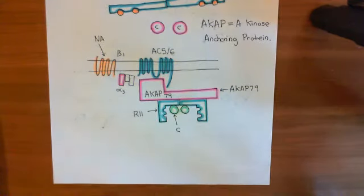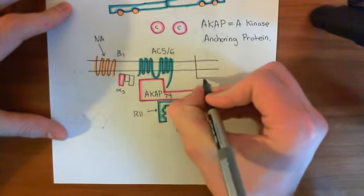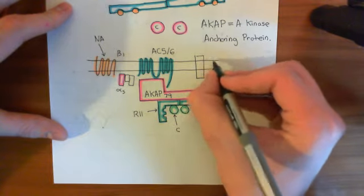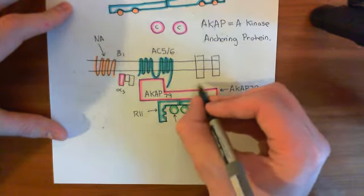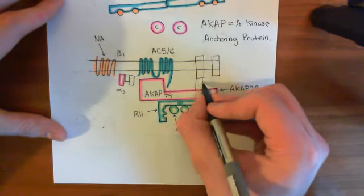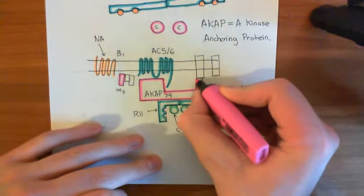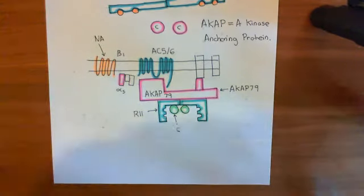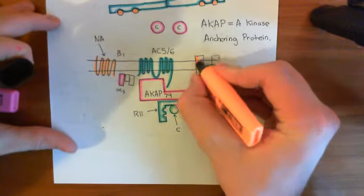The final component of this great big complex is the L-type voltage-gated calcium channel, which is also bound to the AKAP79. There's a binding extension from AKAP79 that connects to the L-type voltage-gated calcium channel, shown here in orange.